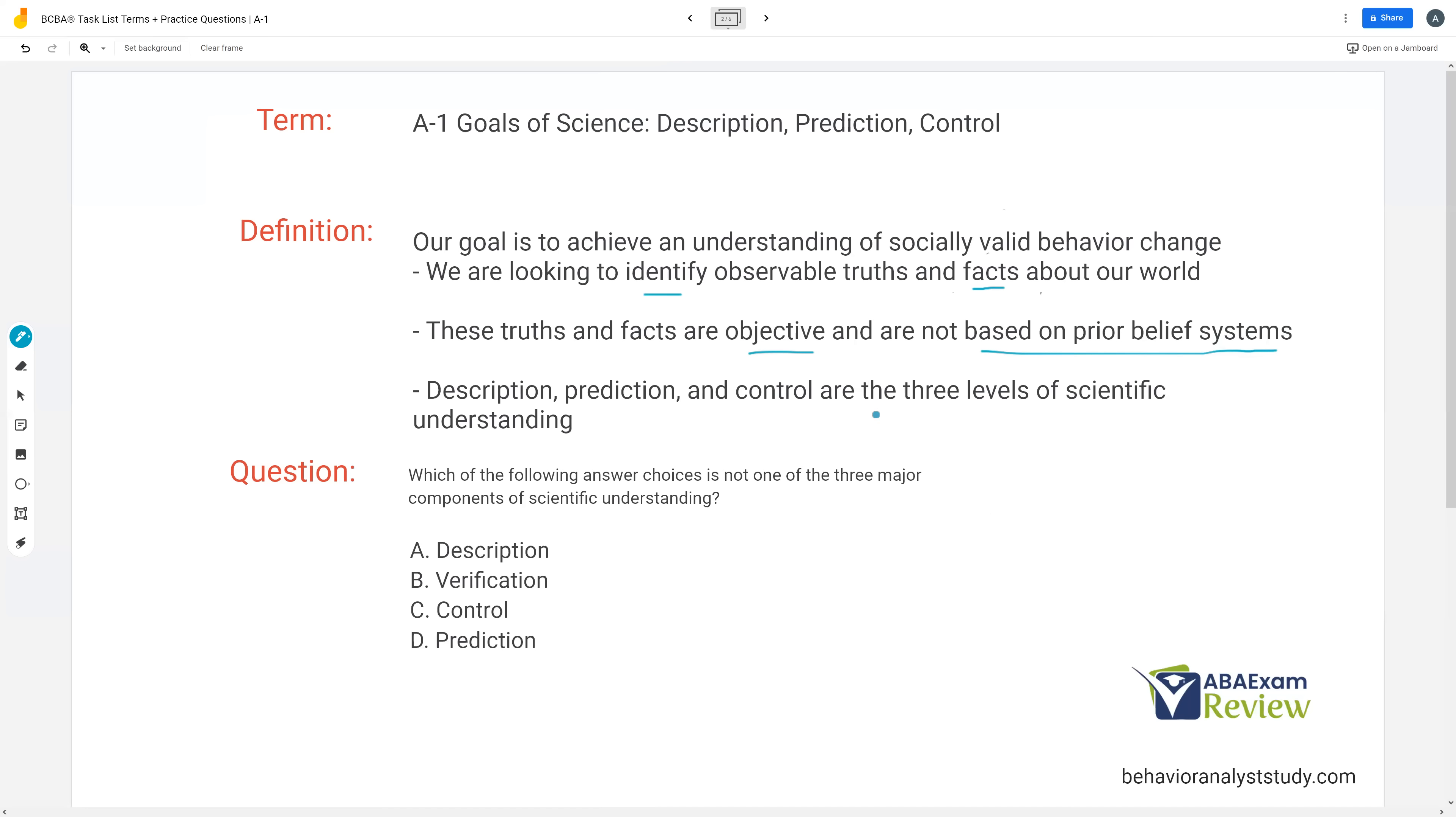So description, prediction, and control are the three levels of scientific understanding. Question: which of the following answer choices is not one of the three major components of scientific understanding? We know A, description is one of our levels.